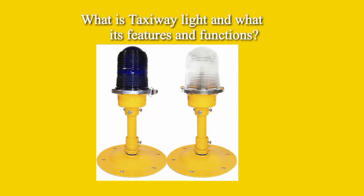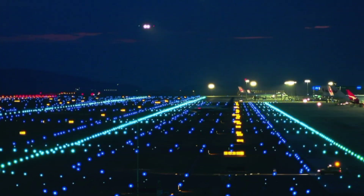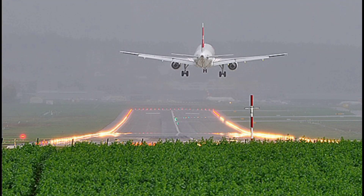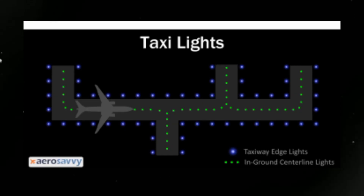Taxiway lights are installed on airport runways to provide guidance to aircraft while taxiing and to enhance safety. Taxiways are designated paths that aircraft use to move between the runway and the airport apron, where aircraft are parked, loaded, and unloaded. These lights serve several important functions. Taxiway lights help pilots identify the correct course when taxiing to the runway, especially during low visibility conditions such as night, heavy rain, fog, or snowfall. The lights are usually installed on the sides of the taxiway, illuminating the designated taxi path.